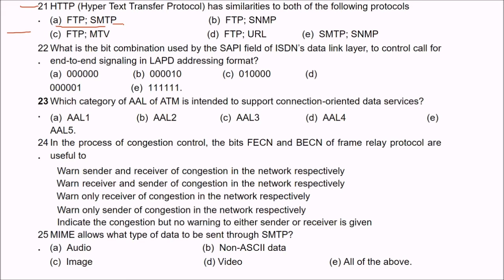Question 22 involves the bit combination used by the SAPI field of ISDN's data network layer to control call-to-end signaling in the LAPD addressing format. Question 23: which category of AAL of ATM — asynchronous transfer mode — is intended to support connection-oriented data services? The answer is C, AAL3, which is intended to support connection-oriented data services.